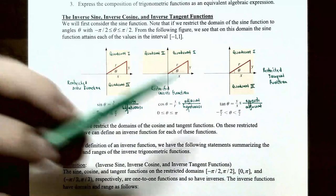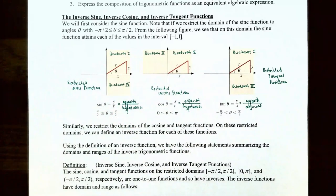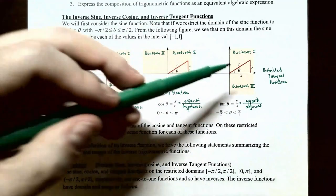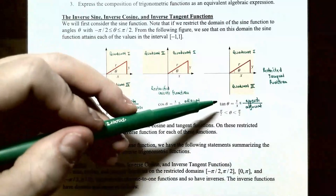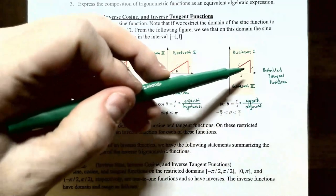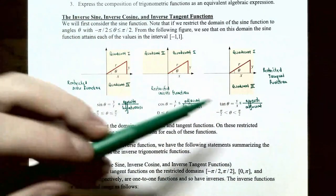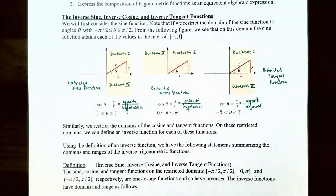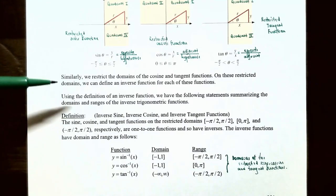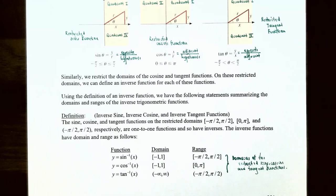The tangent restriction means angle theta is in quadrants 4 or 1 again. For the triangle, tangent of theta is opposite divided by adjacent, so it's y divided by x. Using the definition of an inverse function, we have the following statement summarizing the domains and ranges of the inverse trigonometric functions.